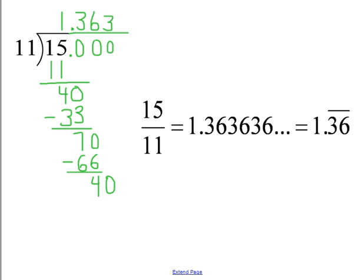A repeating decimal would be a more accurate way of saying it. 15 over 11 is equal to 1.3636 repeating, which can be written 1.36 with a bar over the 36.